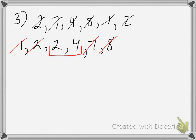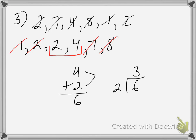To find the mean: step one, add them up — 4 plus 2 equals 6. Step two, divide by the number of items in that set, which is 2. So 6 divided by 2 gives us 3. In this problem, the median is 3. That might seem strange because 3 doesn't appear in the original data set, but this can happen — and it will always happen when you have an even number of items.